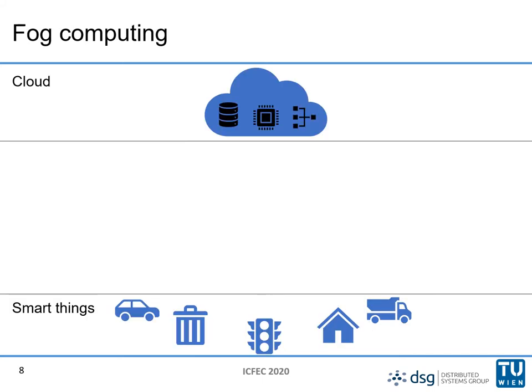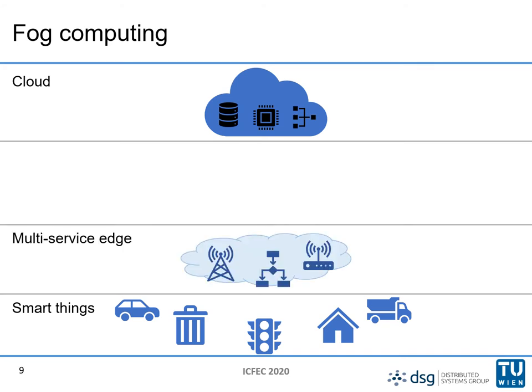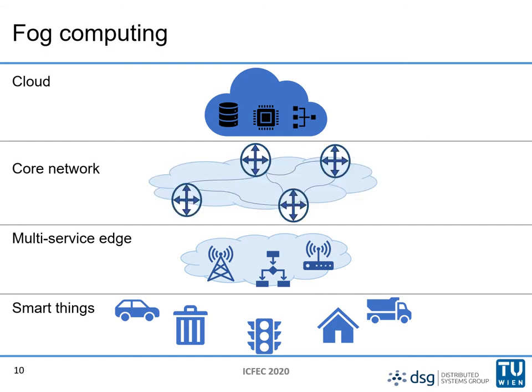To cope with this problem, fog computing was introduced. In fog computing there is still the cloud and also the everyday objects, but there are also computational resources at the edge of the network close to the smart devices. This can be for instance in base stations or access points, and also there can be resources at the core network, for example in routers and switches.